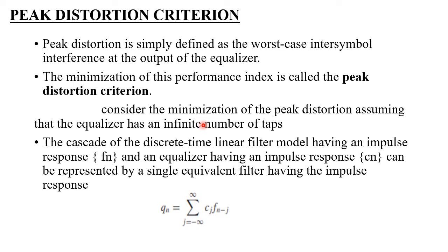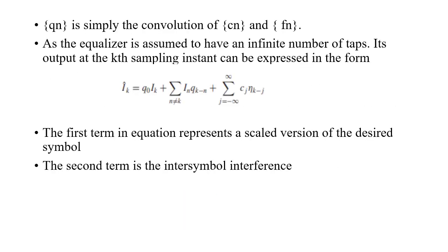Consider the minimization of peak distortion assuming the equalizer has an infinite number of taps. The cascade of the discrete-time linear filter model with impulse response fn and an equalizer with impulse response cn can be represented by a single equivalent filter qn, which is the convolution of cn and fn. So qn is a function of both cn and fn.